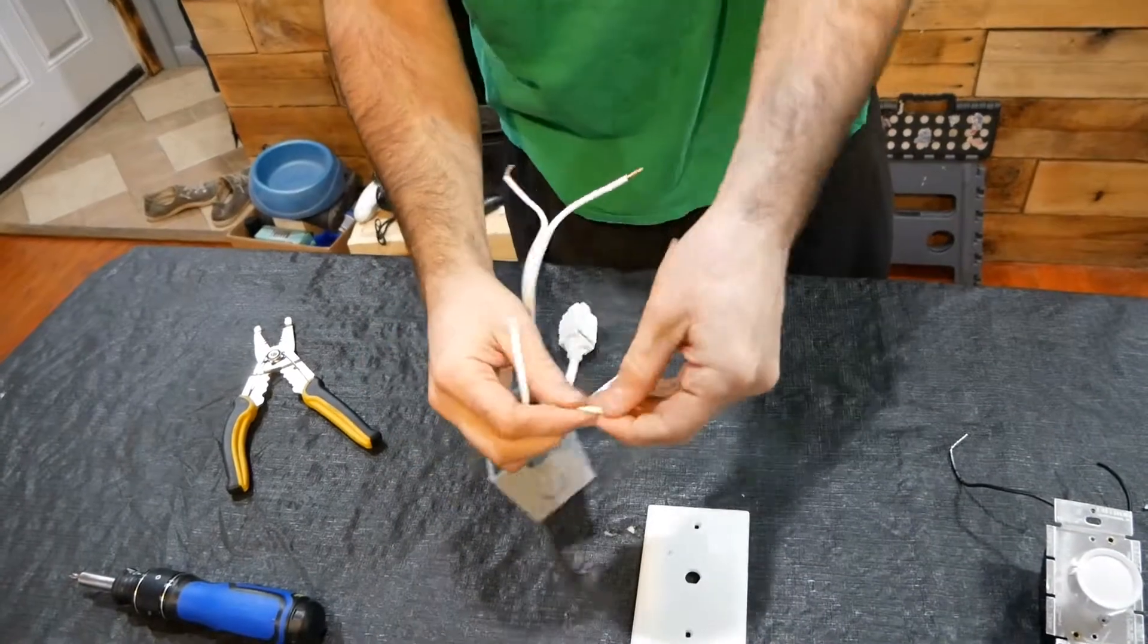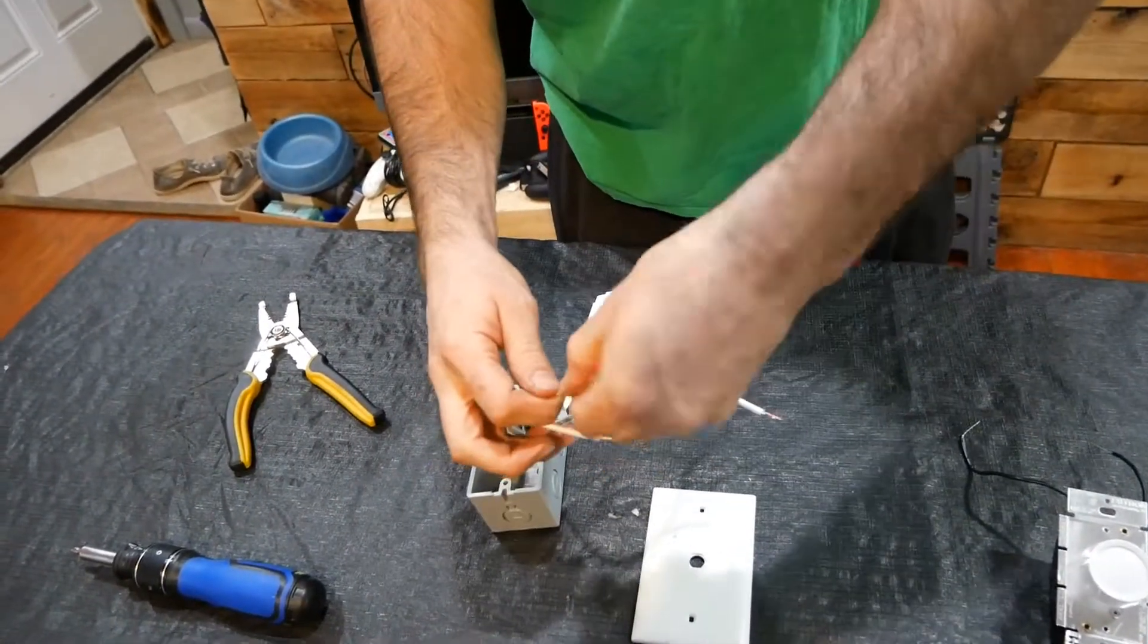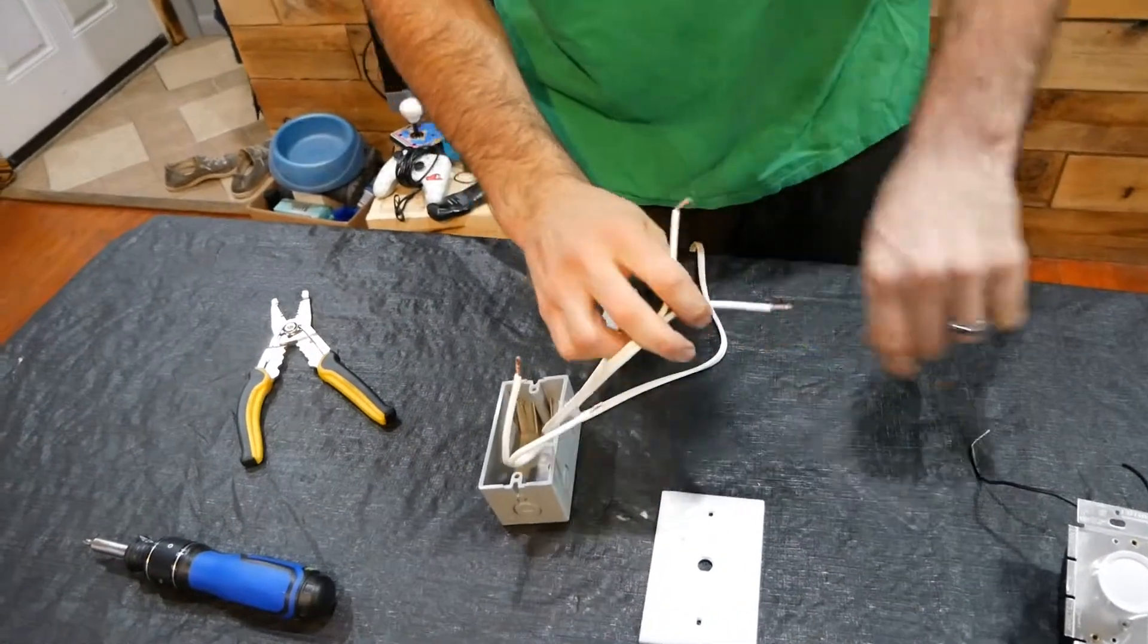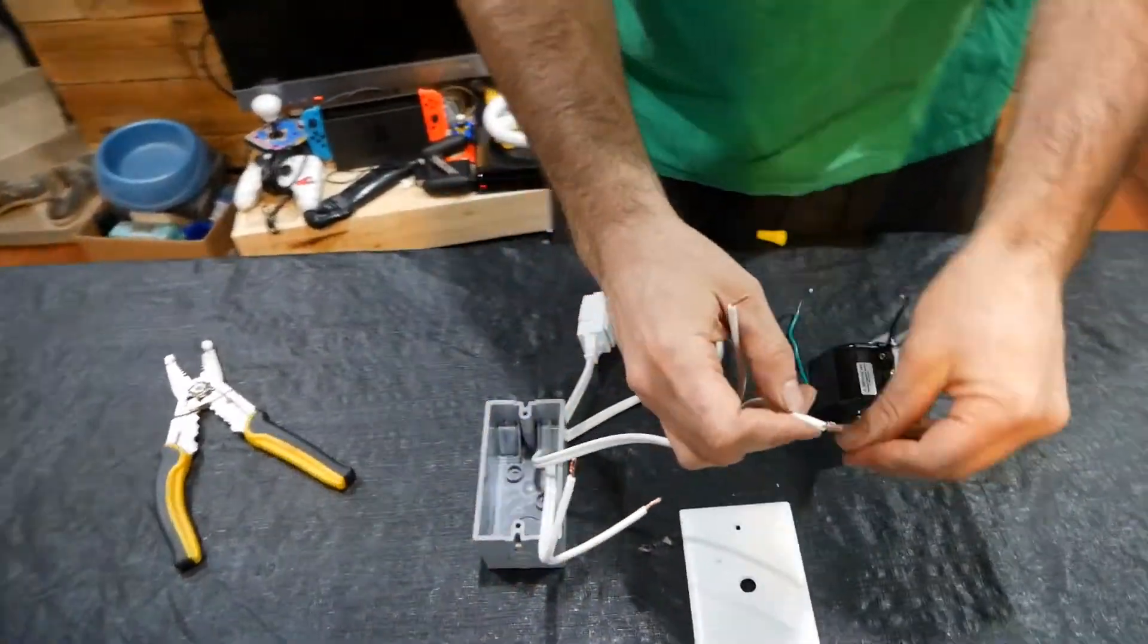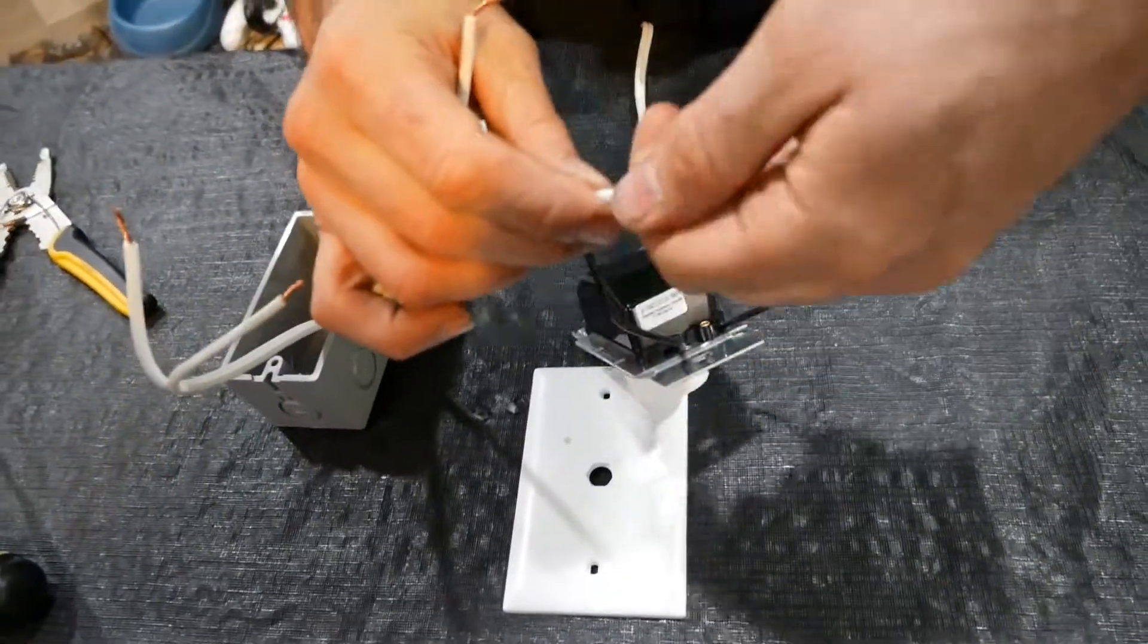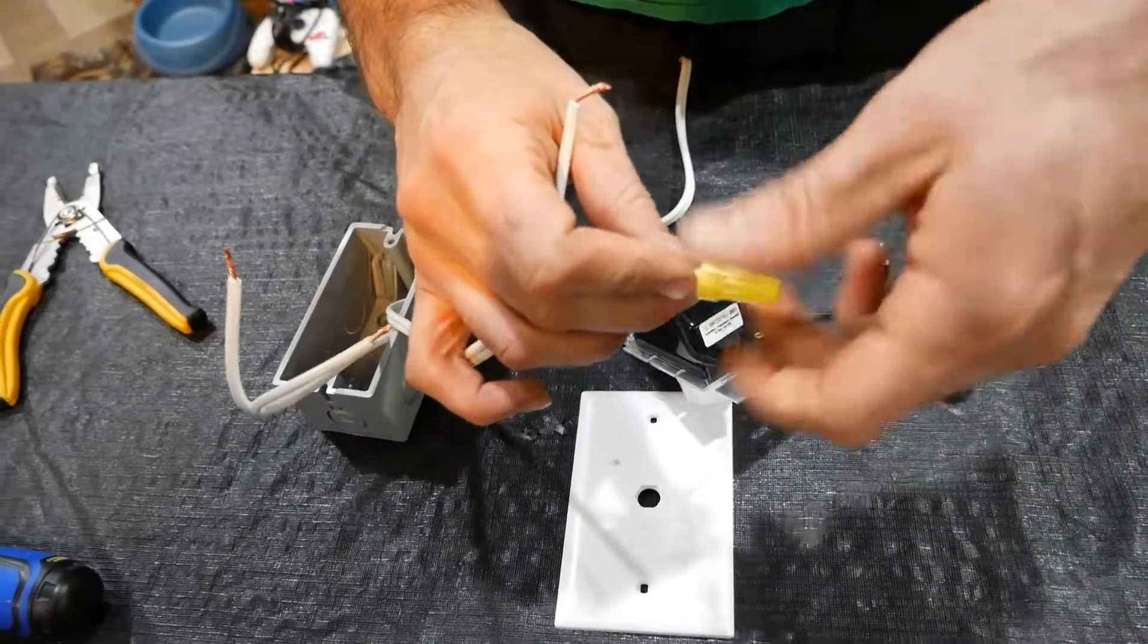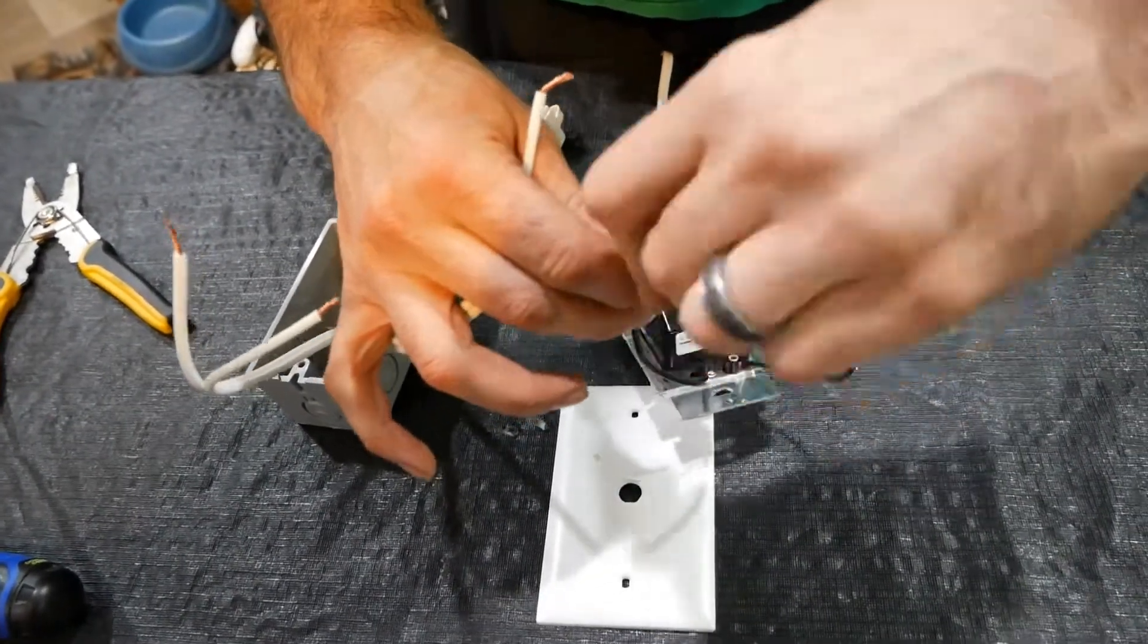Now we're going to take one wire from each side, doesn't matter which one because it's alternating current, and we're going to connect it to the dimmer switch. We're going to use a wire nut, cap it on there.